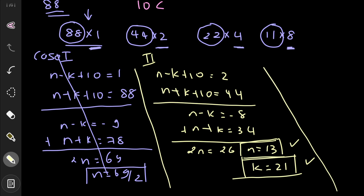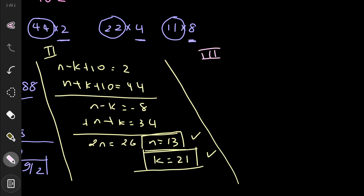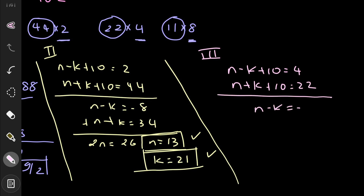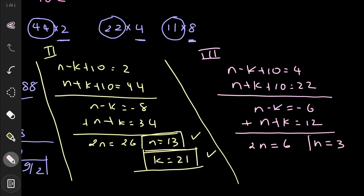Case 3: 22 × 4. We set (n − k + 10) = 4 and (n + k + 10) = 22, giving n − k = −6 and n + k = 12. Adding: 2n = 6, so n = 3. Then k = 3 + 6 = 9. Both n = 3 and k = 9 are positive integers, so (n, k) = (3, 9) is our second valid solution.